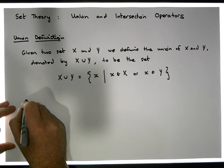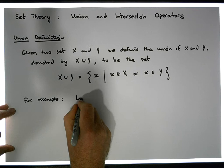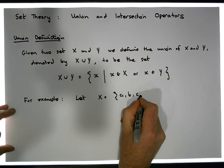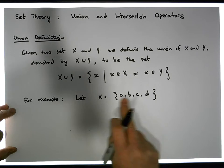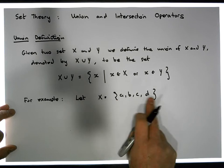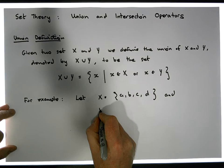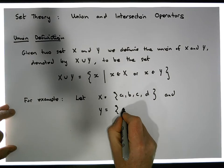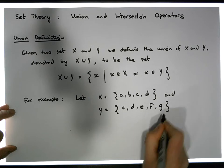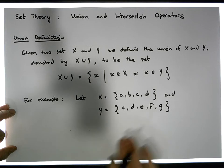For example, let x equal the set containing the values a, b, c, and d. So x is a set with cardinality four. And let y be equal to the set containing the values a, c, d, e, f, and g. So y is a set of cardinality five.